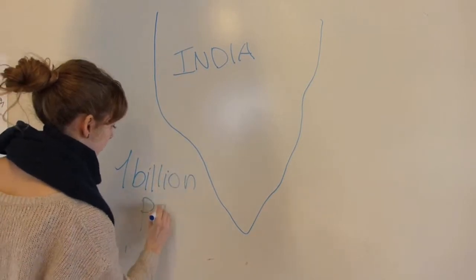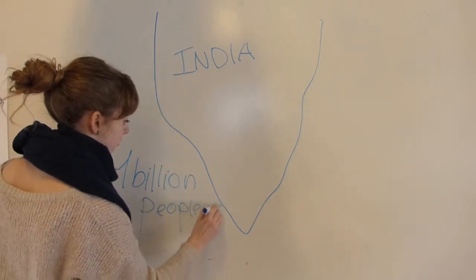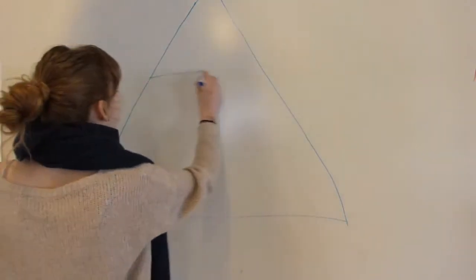The caste system is a social hierarchy deciding what status you have in society. There are four castes, each of them holding different groups of people.